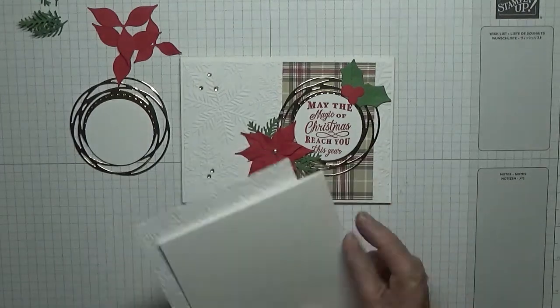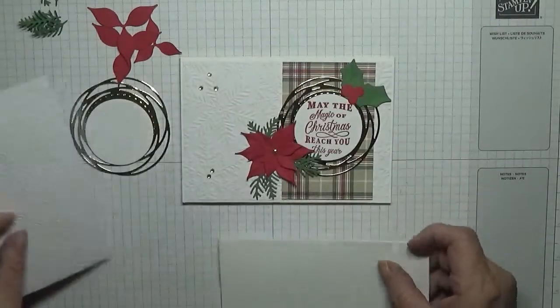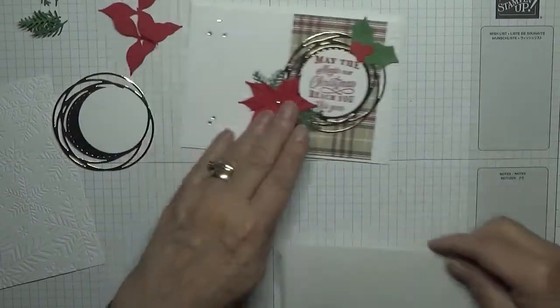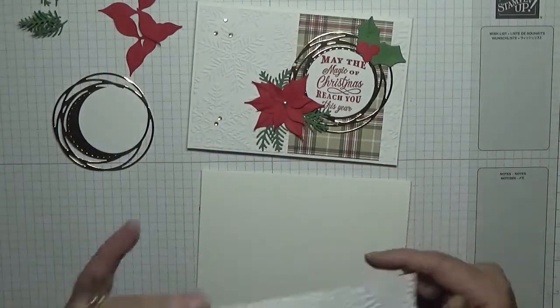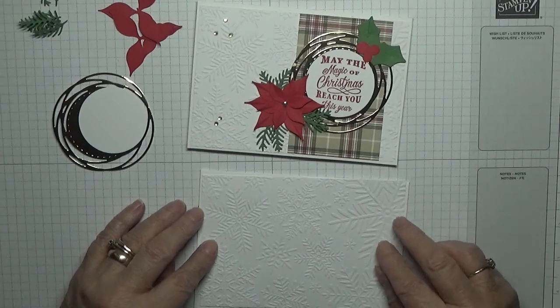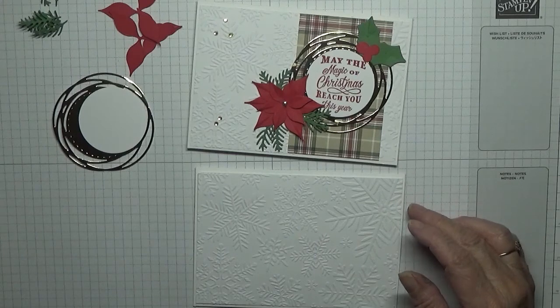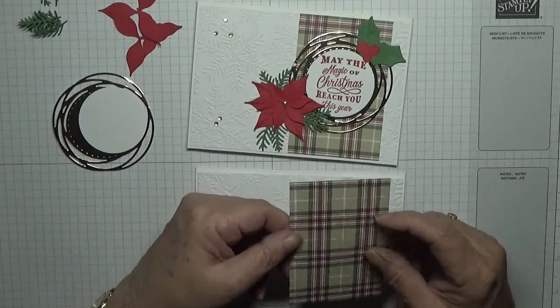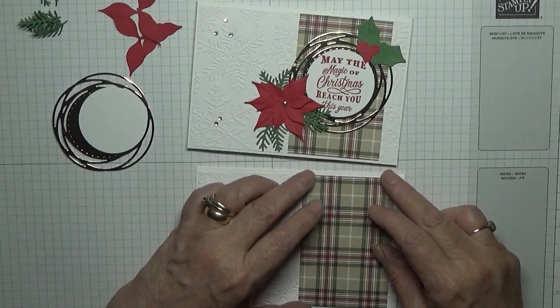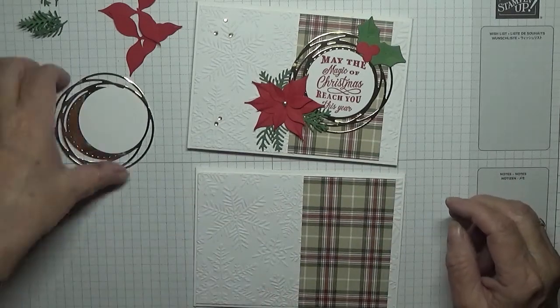Got a card base of eight and a quarter by five and seven eighths, scored at four and one eighth, folded in half, and let's burnish it. I have a piece already embossed with large snowflakes on it. This is five and five eighths by three and seven eighths. I have a piece of the plaid paper from the Christmas catalog and this is two and a half inches by three and seven eighths.